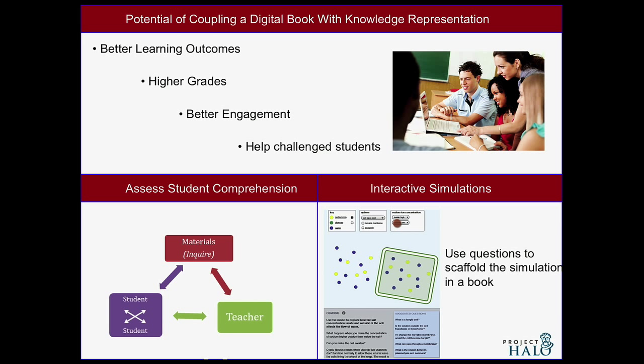There are other uses of knowledge representation that we have considered but not fully investigated — for example, it can be used to develop a more accurate model for student comprehension or to scaffold a simulation that might be embedded in the textbook. In summary, we are at a point where paper-based books are transitioning into digital books, and knowledge representation gives us a fantastic opportunity to ensure that this transition is not merely superficial but leads to better learning for a wider class of students.